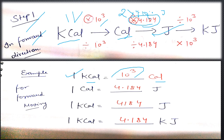If you want to change 1 kilocalorie into Joule, you first multiply by 10 to the power 3, and then multiply by 4.184. So 1 × 1000 × 4.184 = 4184 Joule. Try this example by yourself before moving to the next one.